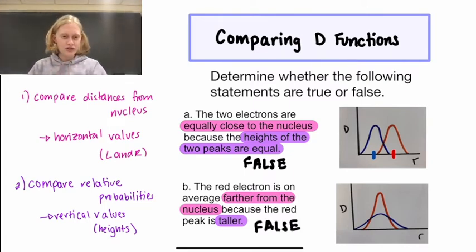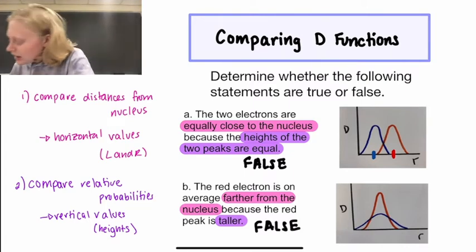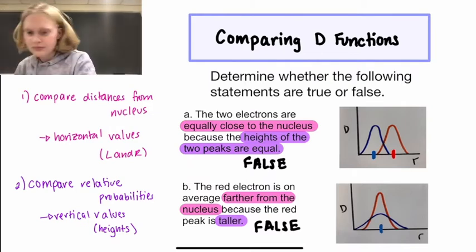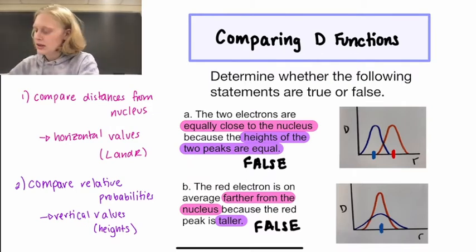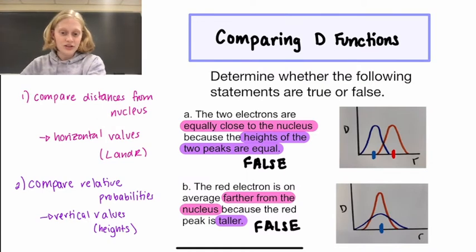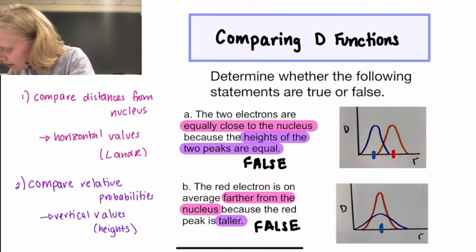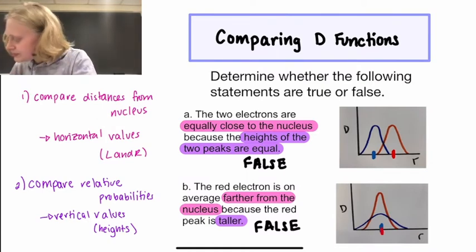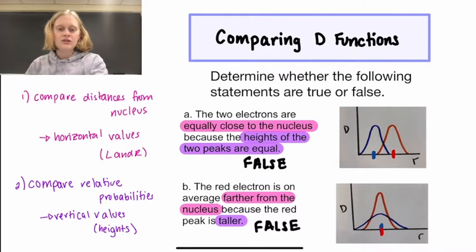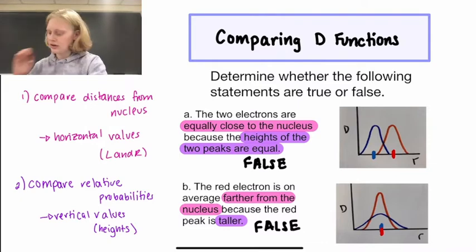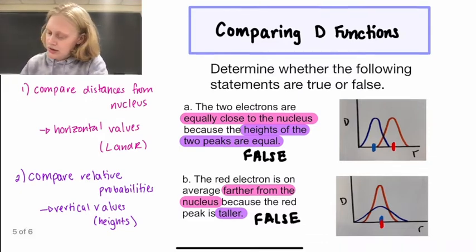If we look at the blue function, it has an average value right here. And if we look at the red function, it also has an average value right here. So they actually have the same average value, meaning they are equally close to the nucleus.